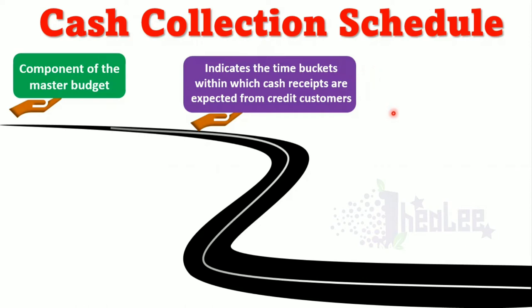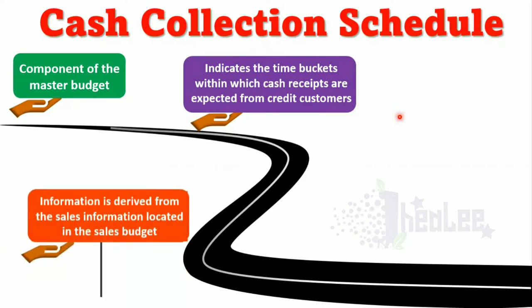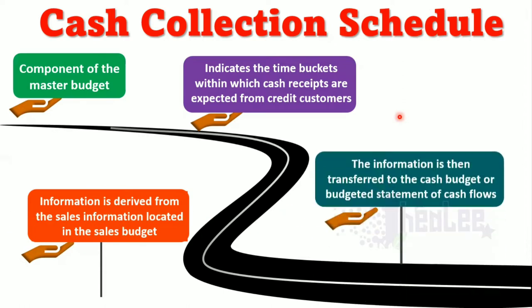Another point is that information is derived from the sales information located in the sales budget. A business prepares the cash collection schedule after preparing the sales budget. The sales budget was looked at in a previous session — the link is in the description below. And the final point is that the information is then transferred to the cash budget or budgeted statement of cash flows.